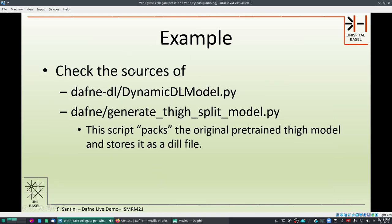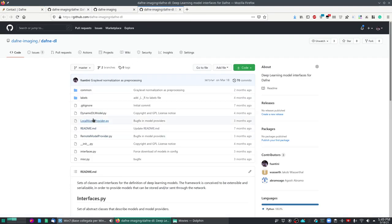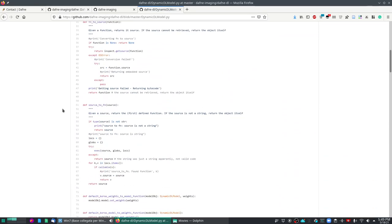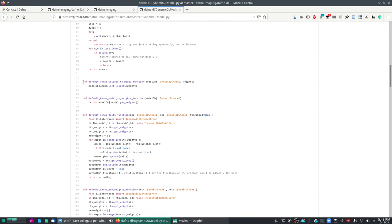So for example we have now a small look of the sources of the dynamic dlmodel and the generate tie split model which is one of the two models that are offered together with Daphne. So let's go to the dynamic dlmodel. So you see this is the way that one of the generic functions is defined. This is a function to set some weights into a model with a Keras model, and this is simply how it is realized. So the first parameter is the instance of the dynamic dlmodel and then you have the weights. And similarly if you want to retrieve the weights, the retrieve weights function is just this Keras function that converts the weights into a list of NumPy arrays.